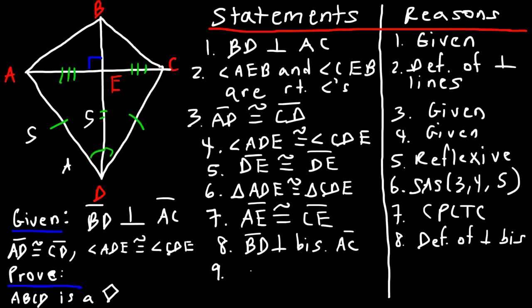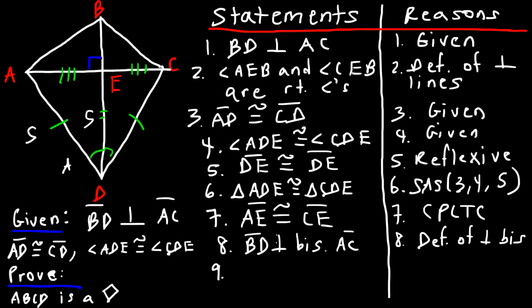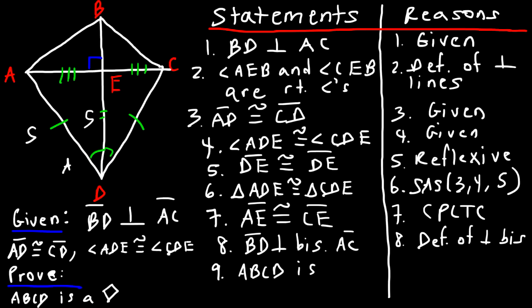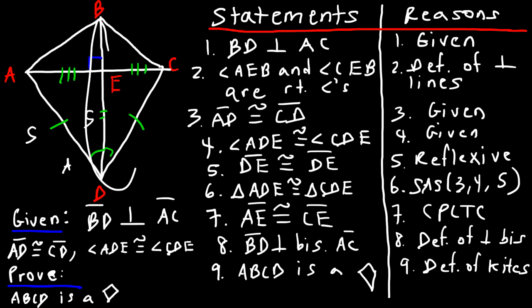A perpendicular bisector forms a right angle with the other line and breaks it into two equal parts. Step nine is our final statement: ABCD is a kite, with the reason being the definition of kites. If you can prove that BD is the perpendicular bisector of AC, you've shown it's a kite. Now let's work on another example.